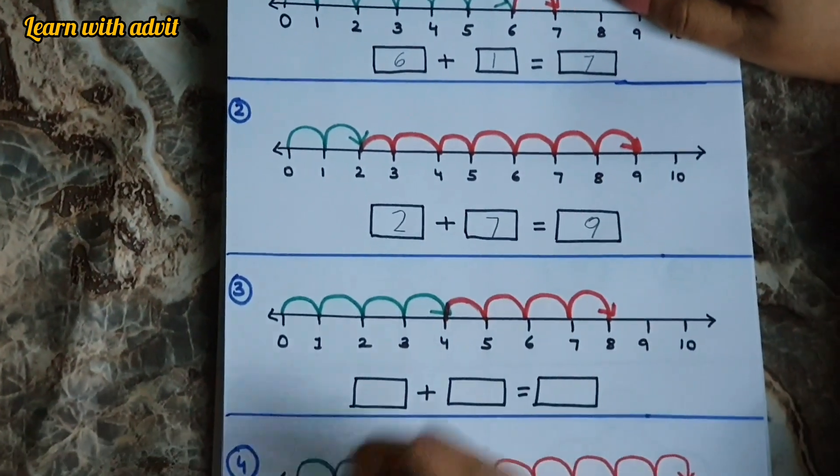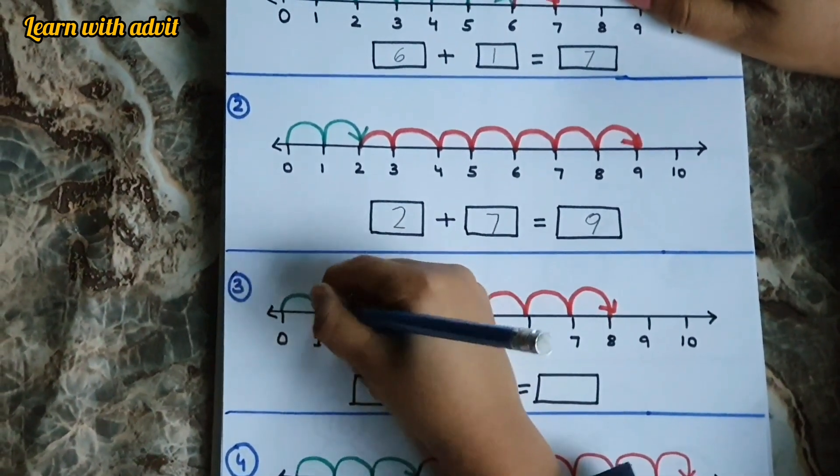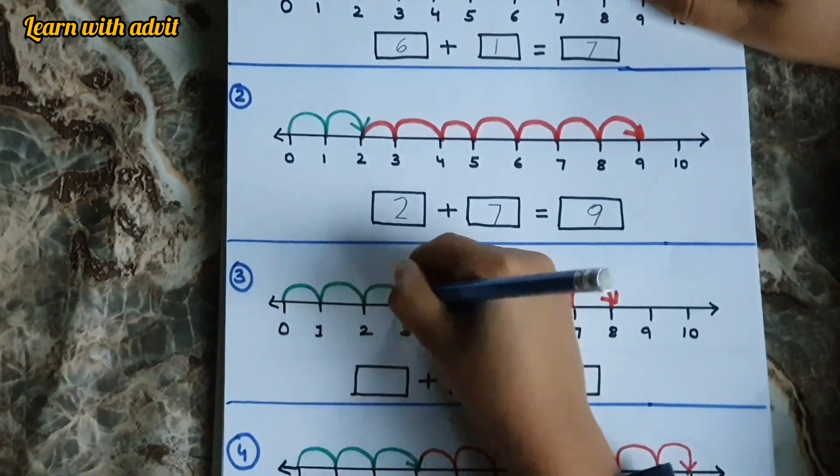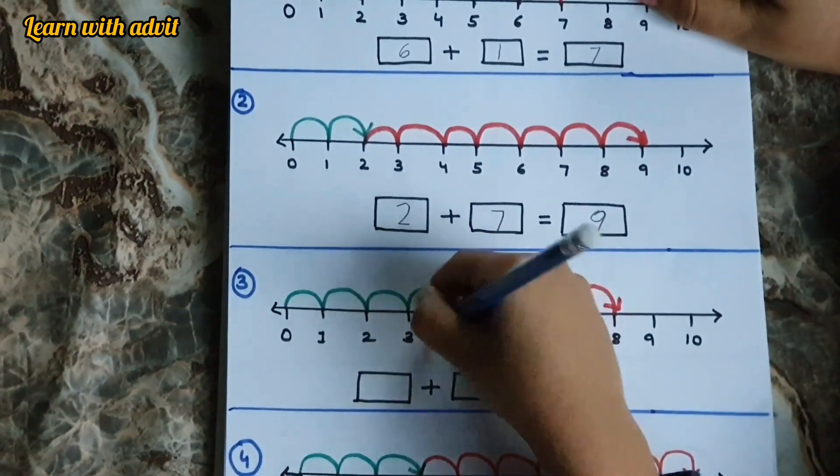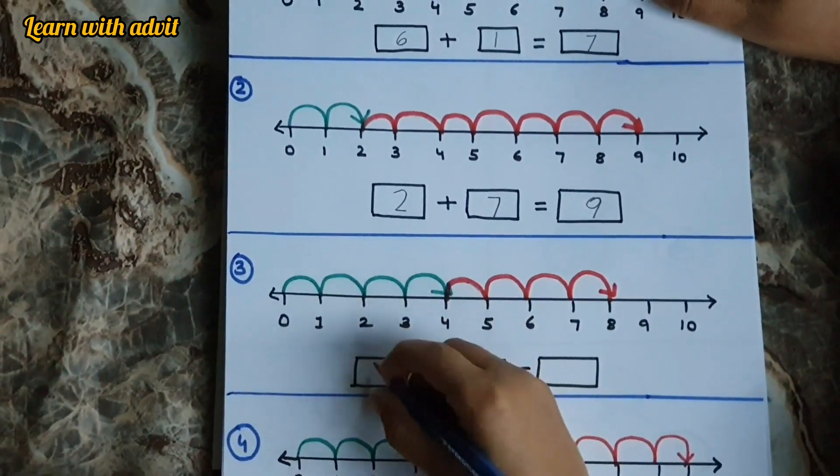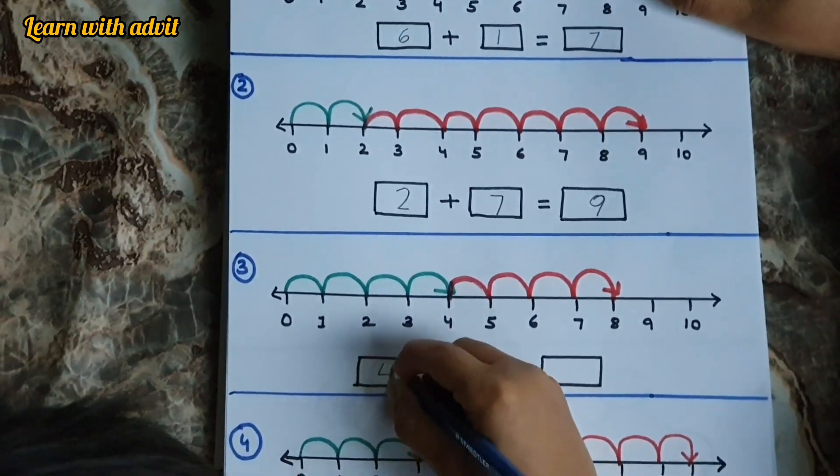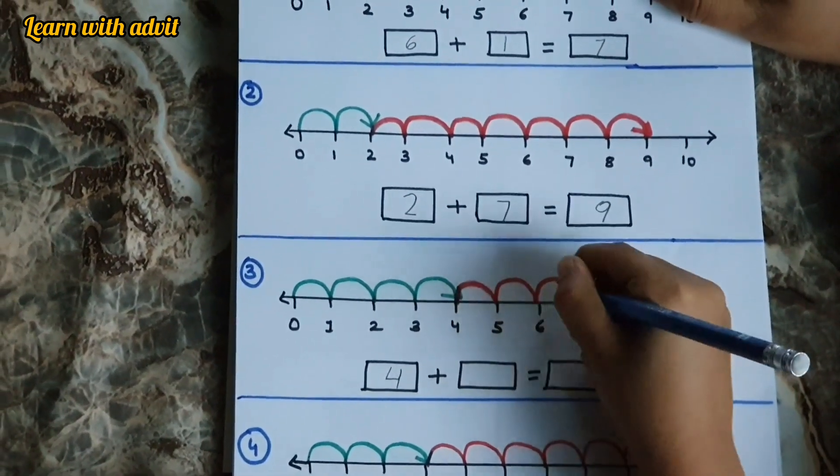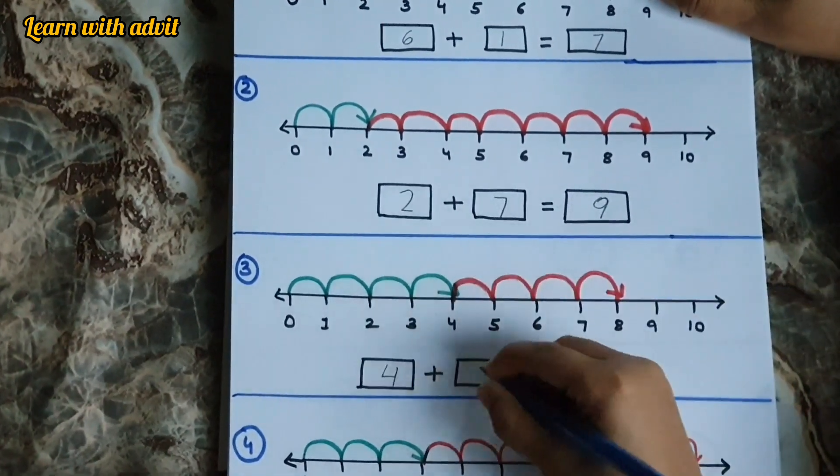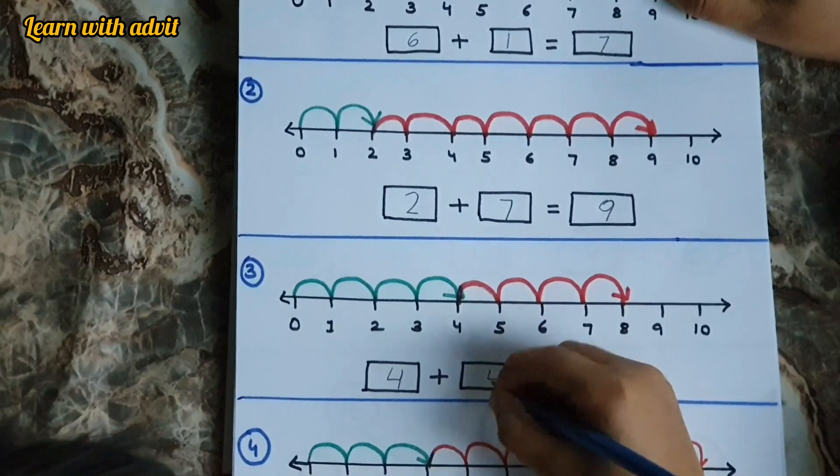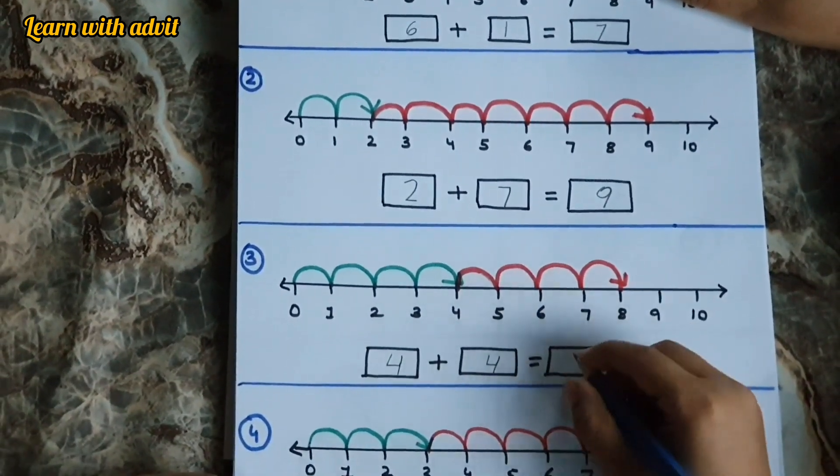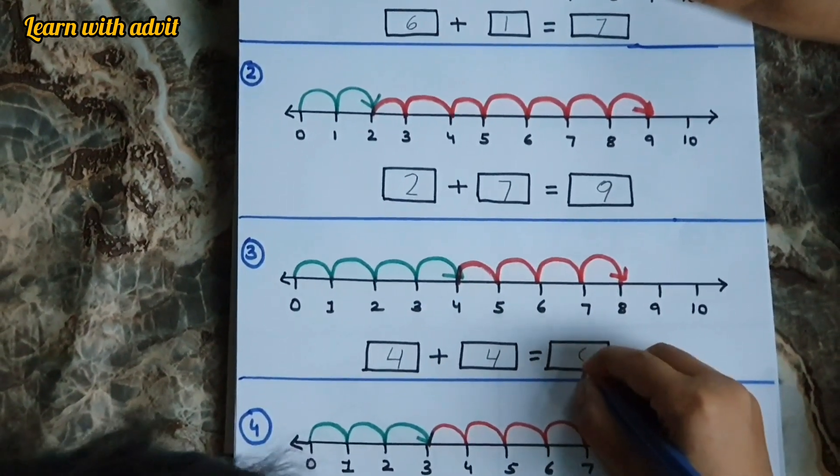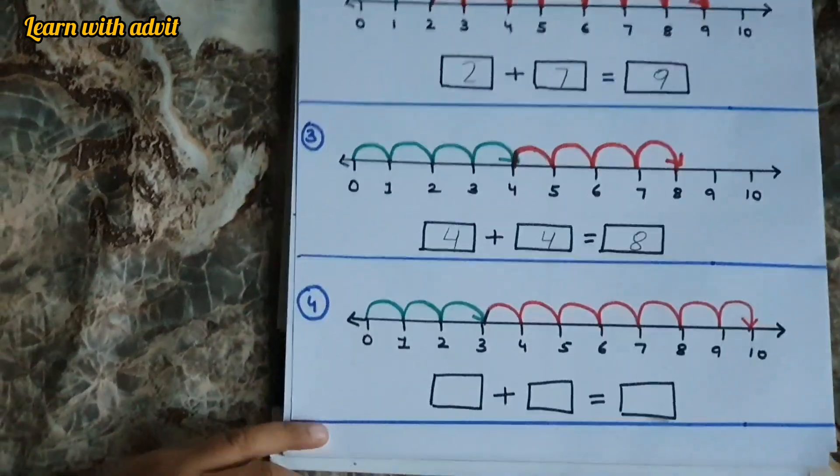Next one. 1, 2, 3, 4. So it's 4 plus 1, 2, 3, 4. 4 plus another 4 equals 8. It's a double.